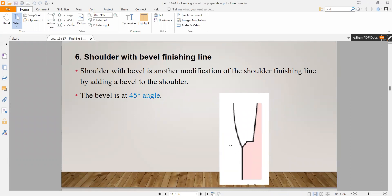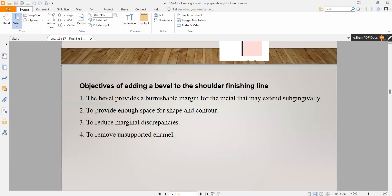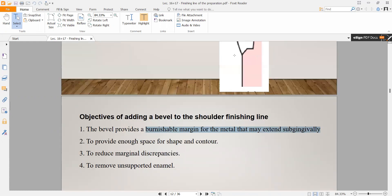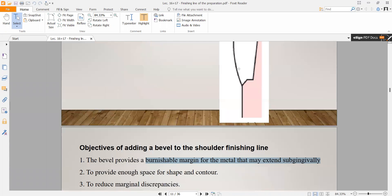The same idea applies, but the difference is we make a bevel at 45 degrees. A shoulder with bevel is another modification for shoulder finishing line by adding the bevel to the shoulder. The bevel is at a 45-degree angle. Why do we make a bevel? Why not just leave a regular shoulder? It has benefits. The bevel provides a burnishable margin for the metal that may extend subgingivally.